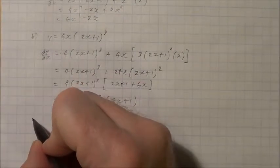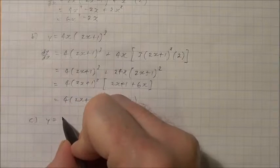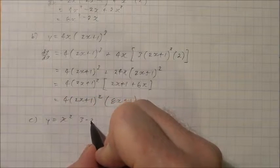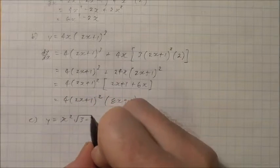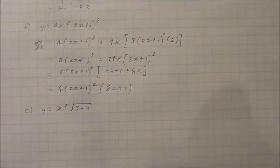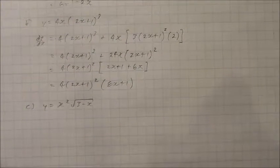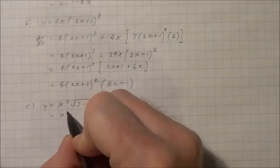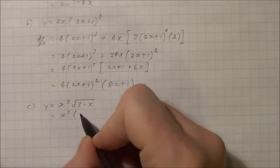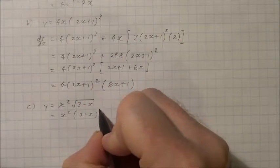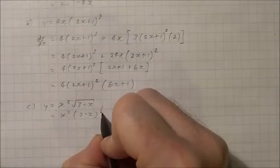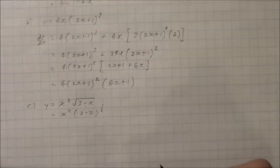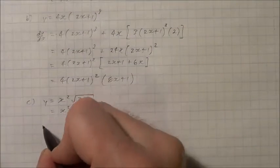Part C: y is given as x squared multiplied by the square root of 3 minus x. I'll change this root into exponent form, so I'll have x squared times 3 minus x to the exponent one half. Now I'll apply the product rule.